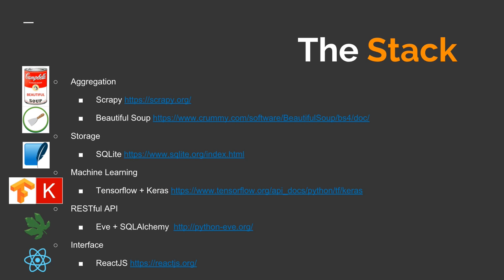From the SQLite database, I do some preprocessing and give it to TensorFlow and Keras. TensorFlow does all the heavy lifting of building the neural network. Keras is this nice, clean, consistent interface that sits on top of it — really easy to understand and use, so rather than writing a lot of code to build your TensorFlow neural network, you write much less. I'm using Python's Eve with the SQLAlchemy plugin — a really simple RESTful interface. You just point it to your database and it makes all the endpoints for you. And then most of you probably know about React — Facebook's front end.